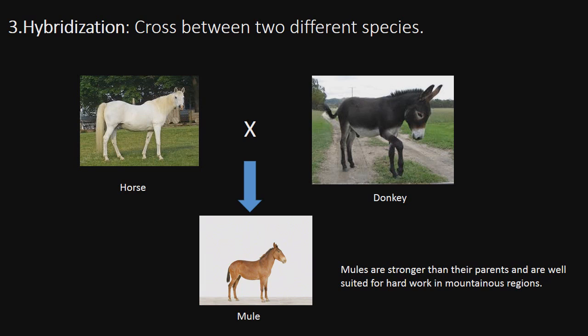Hybridization is a cross between two different species. The offspring produced is far superior than the parent.